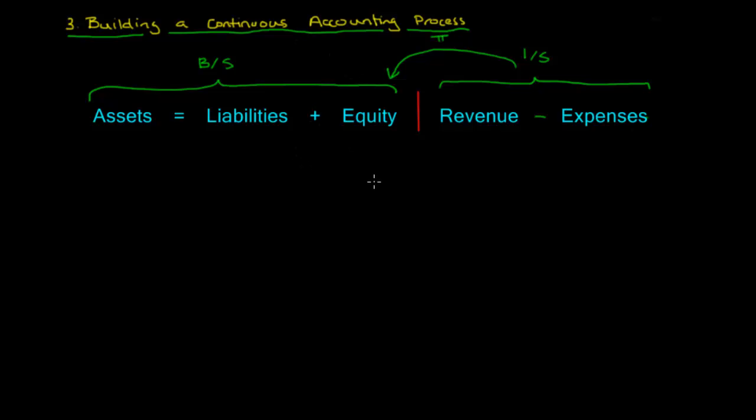In terms of giving you a quick overview of what this continuous accounting process would look like, we would start with capturing and analyzing all the various transactions. We do that by recording them in what's called journal entries, JE for short.